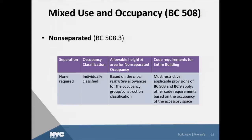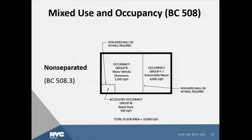Non-separated occupancy: there are no separation requirements for fire resistance rating. These are individually classified based on the most restrictive allowance for the occupancy group classification for table 503. In the next slide, we have three occupancy groups — group B, group F1, and group M. The group F1 is the most restrictive, even though the floor area is less than that of group B. The building would have to comply with group F1 in this example.